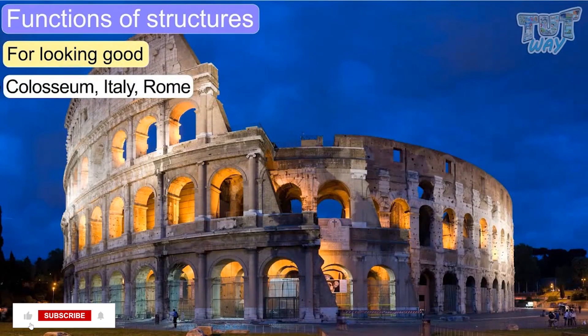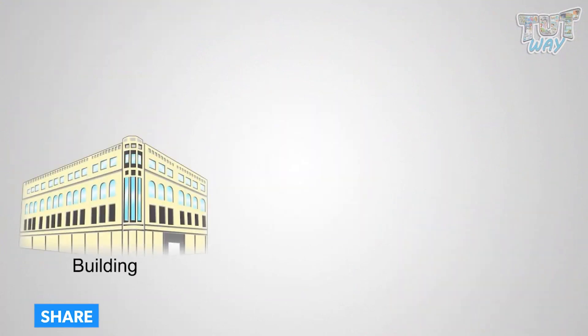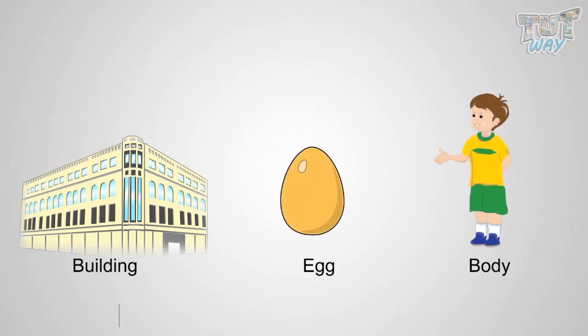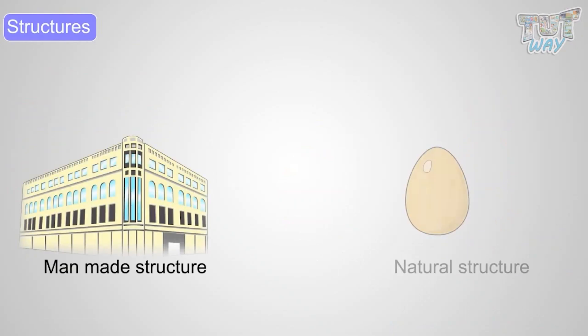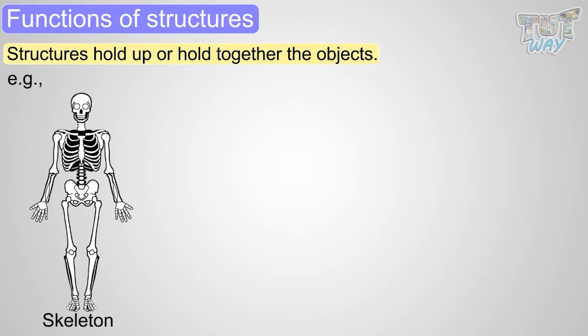Here are some more examples. So kids, let's revise what we learned. We learned that a building, an egg, a body are all structures. Structures can be man-made or natural. We learned that structures hold up or hold together the objects. Examples: our skeleton, our skin, or a hanger.